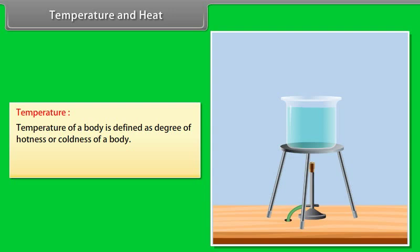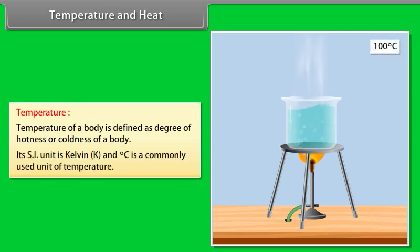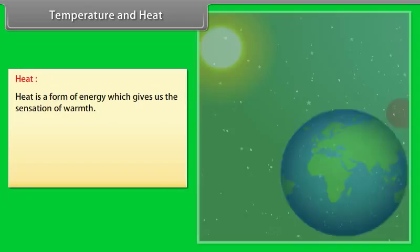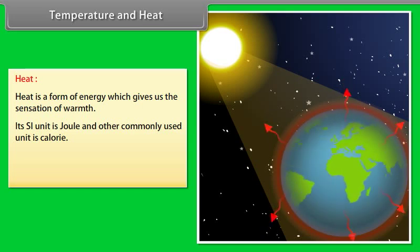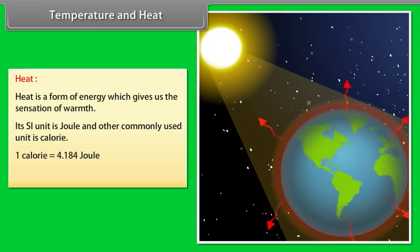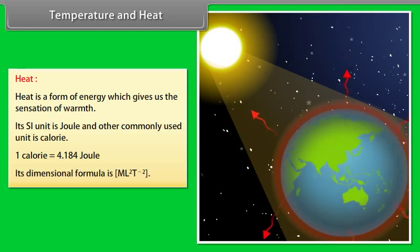Temperature and heat: Temperature of a body is defined as the degree of hotness or coldness of a body. Its SI unit is Kelvin, and degree Celsius is a commonly used unit of temperature. Heat is a form of energy which gives us the sensation of warmth. Its SI unit is Joule and another commonly used unit is calorie. One calorie is equal to 4.184 Joule.